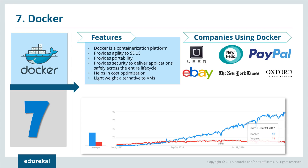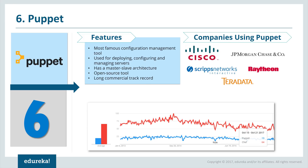Docker is a containerization platform and a lightweight alternative to virtual machines. It completely removes the problem where code works on a developer's laptop but not in the test or production environment, providing a consistent computing environment throughout the software delivery lifecycle. With Docker, you write a Dockerfile, create an image, upload it to a shared repository, and different teams can pull that image and create as many containers as they want. Companies using Docker include Uber, New Relic, PayPal, eBay, New York Times, and Oxford University Press. Compared to Vagrant, Docker is way ahead, scoring 97 versus 11 on Google Trends.